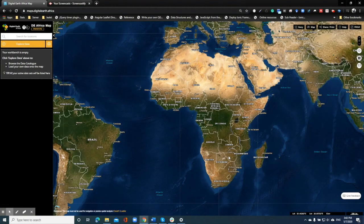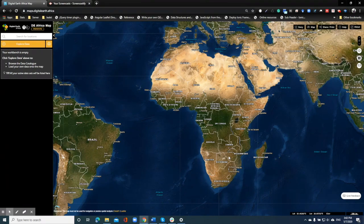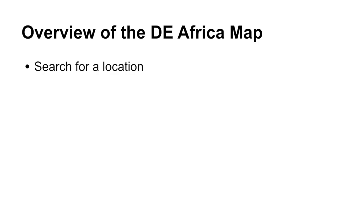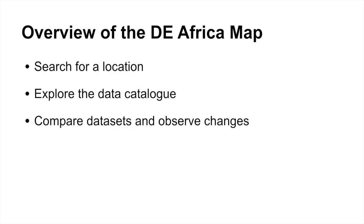Welcome to the Digital Earth Africa web-based interface. The Digital Earth Africa map is the easy way to explore, visualize, and analyze spatial data on the African continent. You can search for places, explore a catalog of datasets, compare different datasets side by side, observe how the landscape changes over time, and create and even share interactive stories.